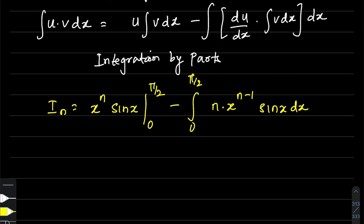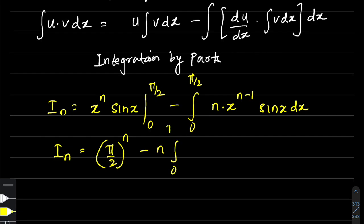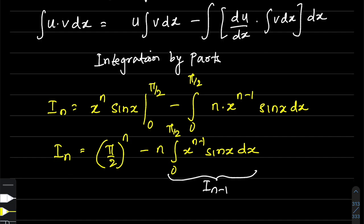Simplifying, the boundary term gives (π/2)^n since sin(π/2) = 1 and the lower limit gives zero. The remaining integral is n times the integral from 0 to π/2 of x^(n-1) sin(x) dx — which we can recognize as n times I_(n-1), since we've just changed the index from n to n-1.